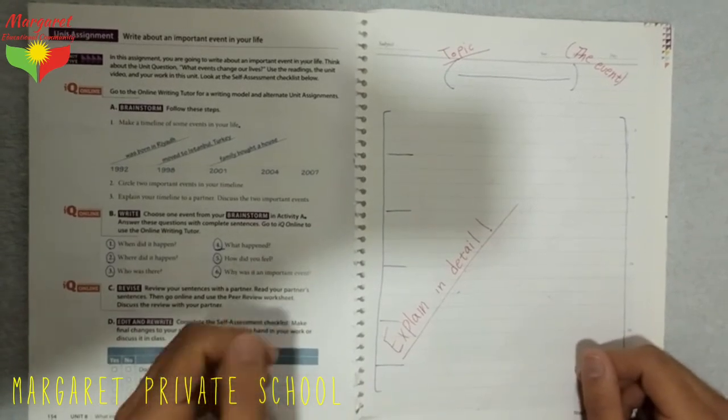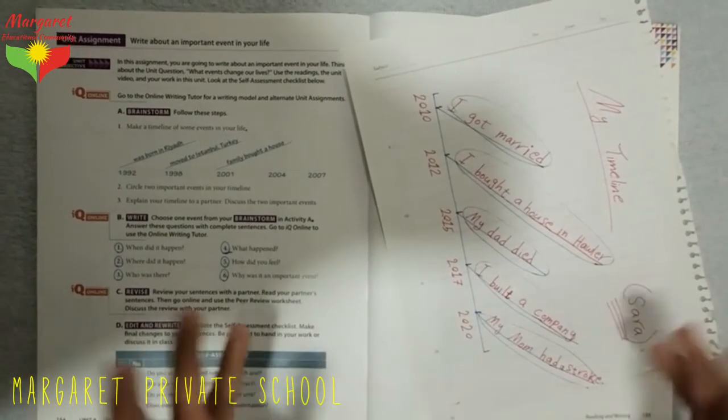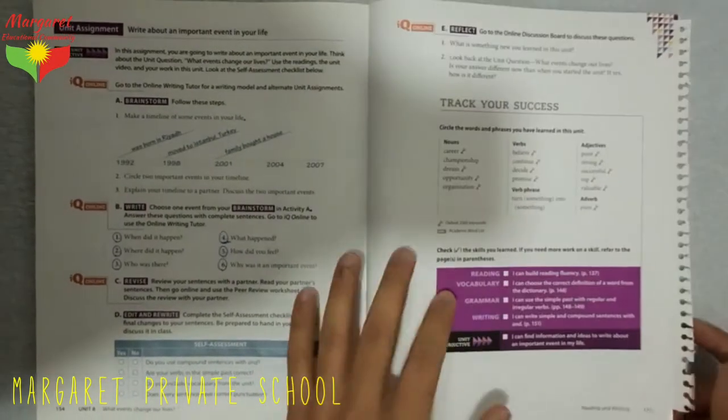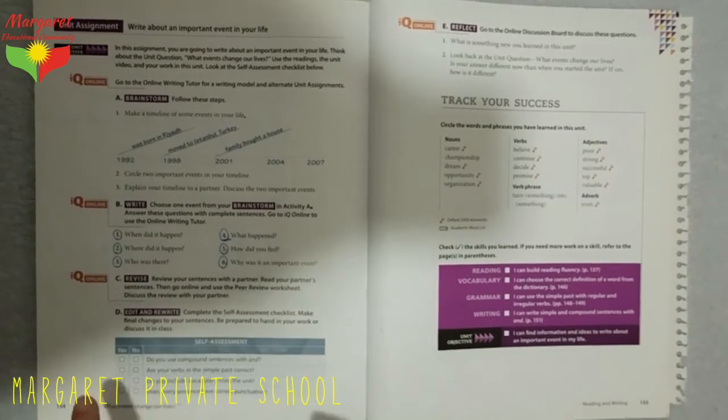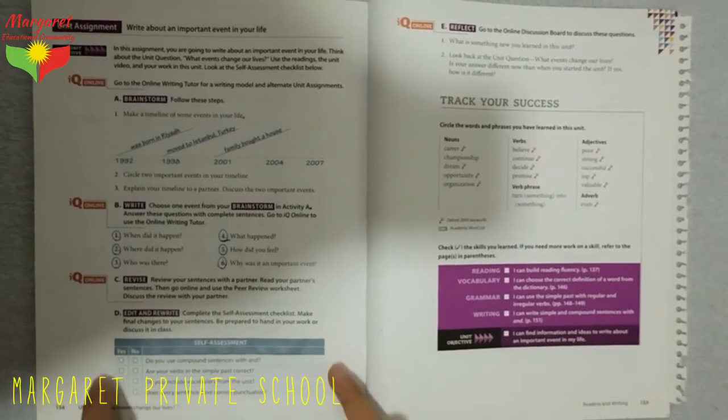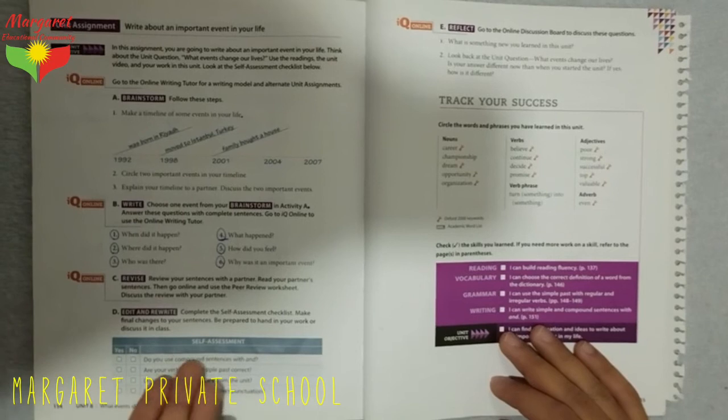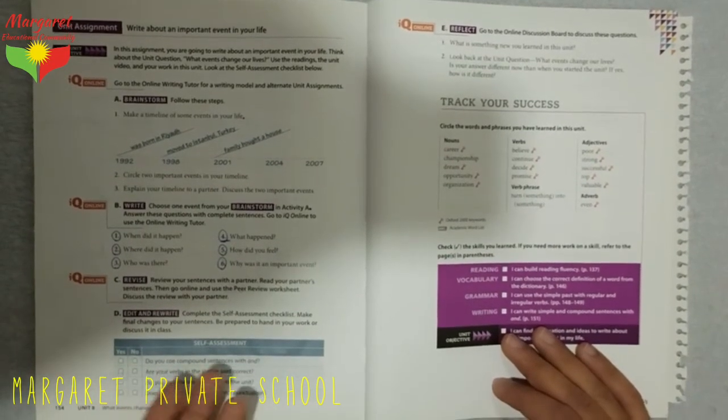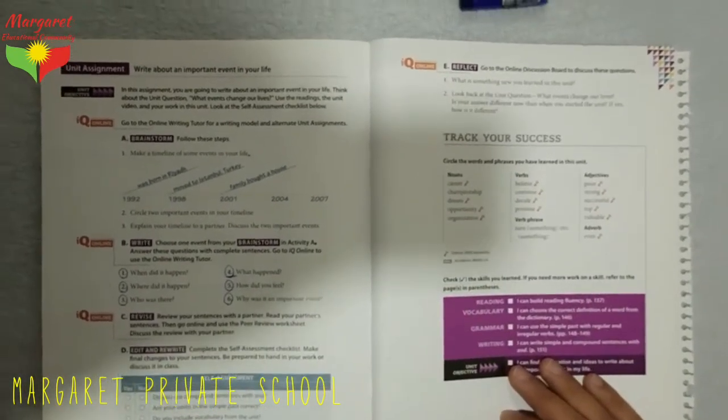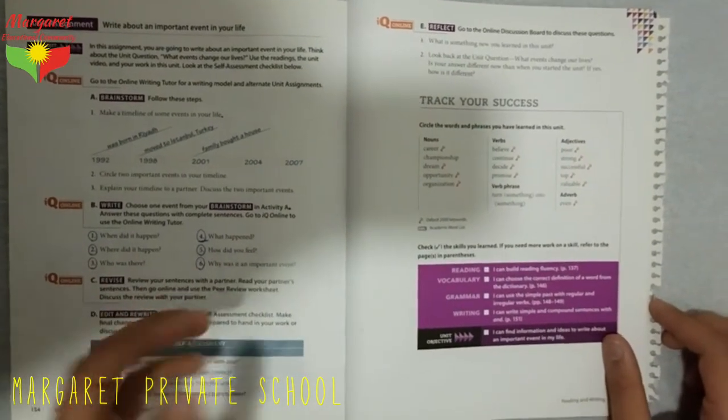There you go, my dears. This is how you do your unit assignment. It's very easy. There's nothing complicated and difficult about this. And also, in the end, you can double-check your writing using the checklist, self-assessment checklist, and try to use the grammars of this unit in your writing. For example, compound sentences with 'and,' verbs, simple past, and these, if you double-check it with this, your paragraph will be more suitable, will be much more stronger.